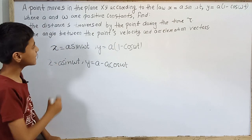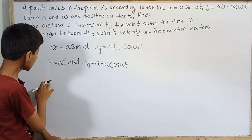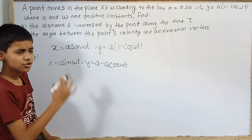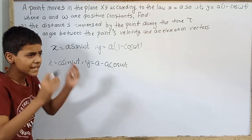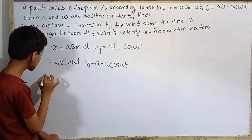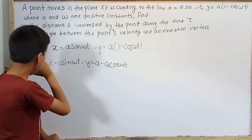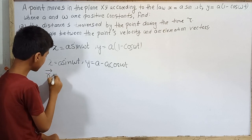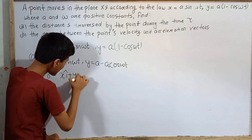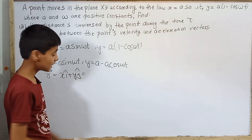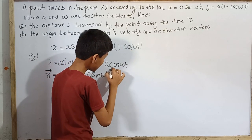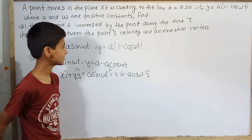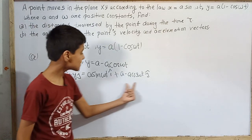I need to find the distance traveled. Distance is speed multiplied by time, and speed is the magnitude of velocity, which is the derivative of the position vector with respect to time. So I write the position vector r = x·î + y·ĵ = a·sin(ωt)·î + a(1 - cos(ωt))·ĵ. Now this becomes easy — this is my r vector.